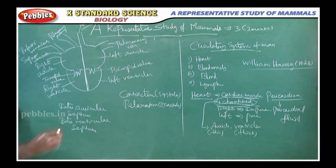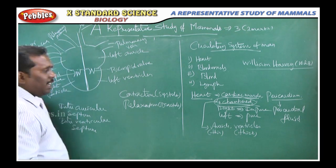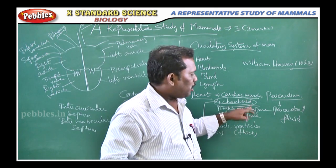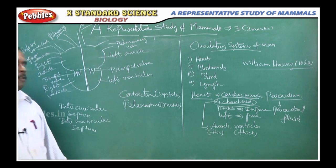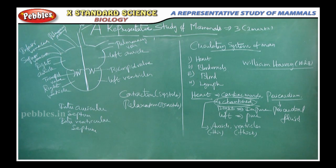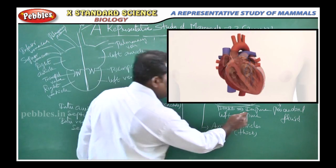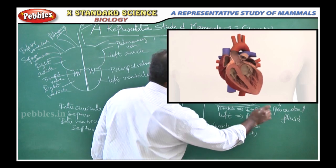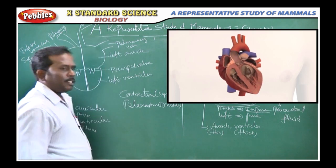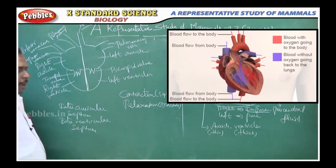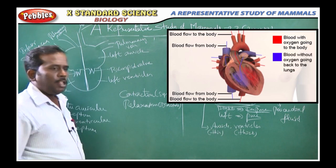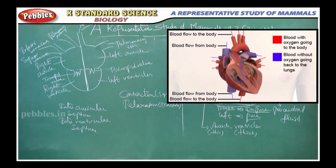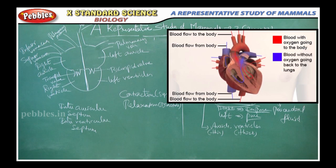The right side of the heart is purely involved in the supply of deoxygenated blood — that is why it is involved in impure blood circulation. The left side of the heart is involved in pure blood circulation, meaning it functions only for oxygenated blood.